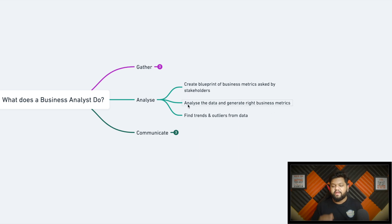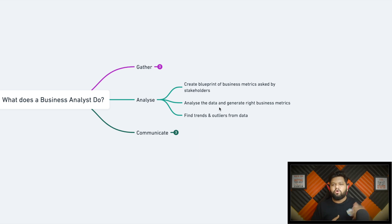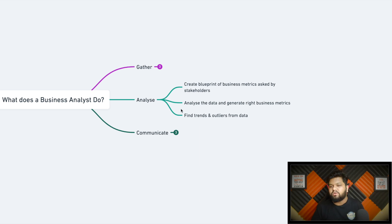After that, analyze the data and generate the right business metrics. For example, in telecom you might try to find a pattern or trend for customer churn — till what period a customer was availing your services and when they became inactive. You figure out those trends and patterns and communicate them to stakeholders so they can take the right decision to retain as many customers as possible.